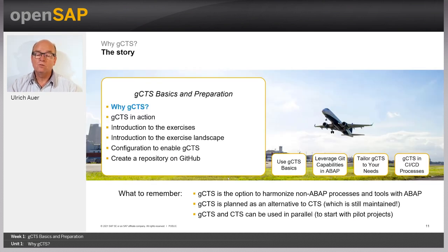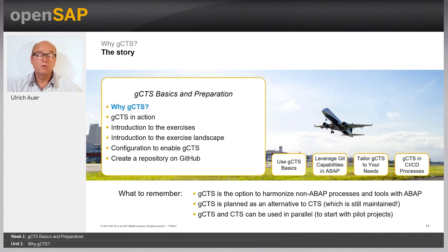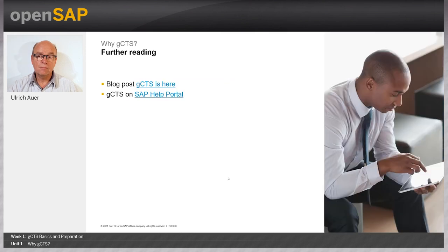What we want you to take away from this first unit: GCTS is the option to harmonize non-ABAP processes and tools with ABAP. GCTS is planned as an alternative to the classic CTS, but the classic CTS will still be maintained and supported. GCTS and classic CTS can be used in parallel, allowing you to start with pilot projects and keep the rest as-is for a period of time that you define. You can find more information in blog posts from our product manager and on help.sap.com.